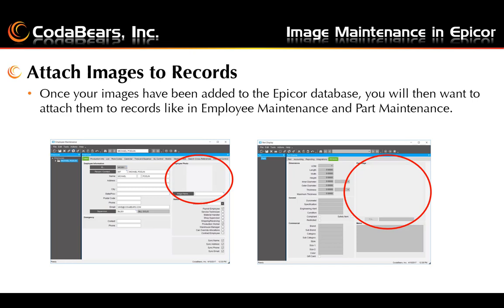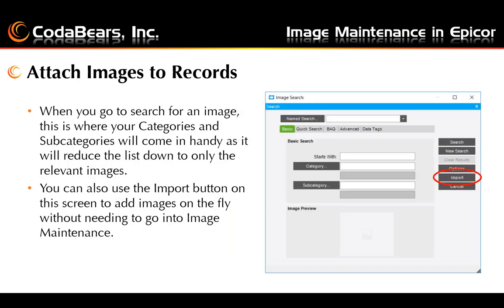For attaching images to records, once you have your images added to the Epicor database, you now want to go and attach them to records like Employee Maintenance or Part Maintenance. You can navigate to Employee Maintenance, select an employee, then select the Image Files button, and browse out to find your image and attach it to the employee record. There is also an import button on the attach image screen where you can import images directly to the database without having to go to Image Maintenance.